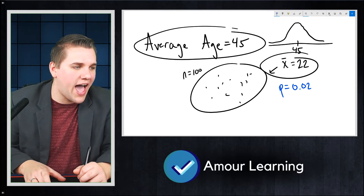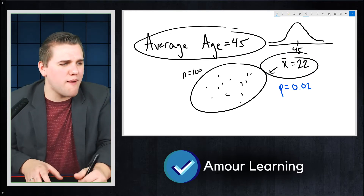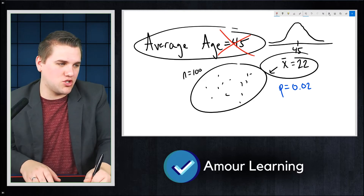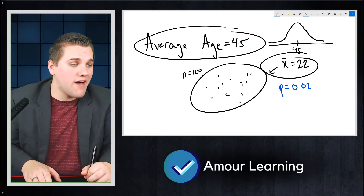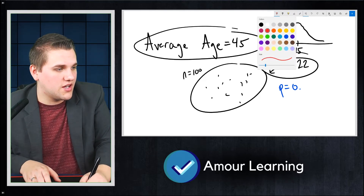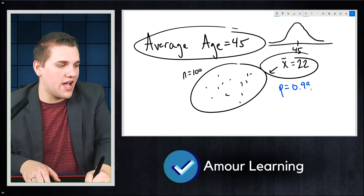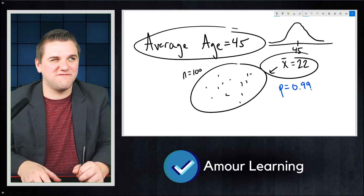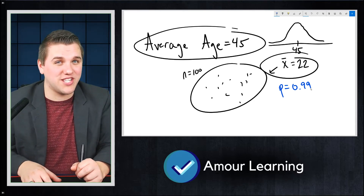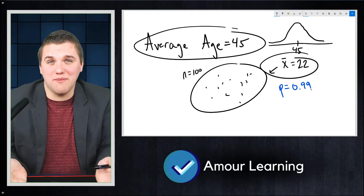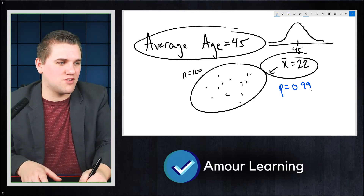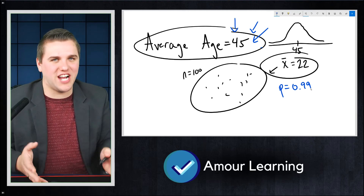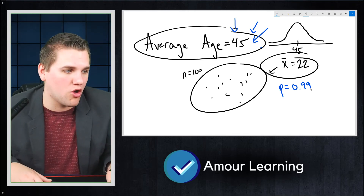If you have a small p-value, you should probably reject the null hypothesis — say that the average age isn't 45. If the p-value was really high, like 0.99, that means 99% of the time you should expect results like this. That's pretty common — not a rare event — meaning there's probably nothing wrong with the original claim. You probably shouldn't reject it; your statistical test didn't show anything wrong with your assumption.